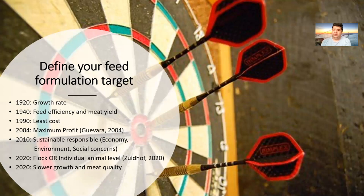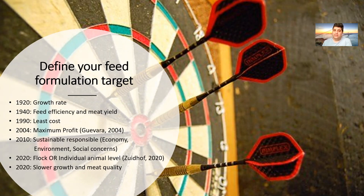The first thing we need to pay attention to in feed formulation practice is defining the target. If we look at the formulation targets chronologically, we can see they have changed over the decades. For example, in 1990 it was on least cost feed formulation, and I would say most of the feed mills all around the world are still working based on least cost feed formulation.